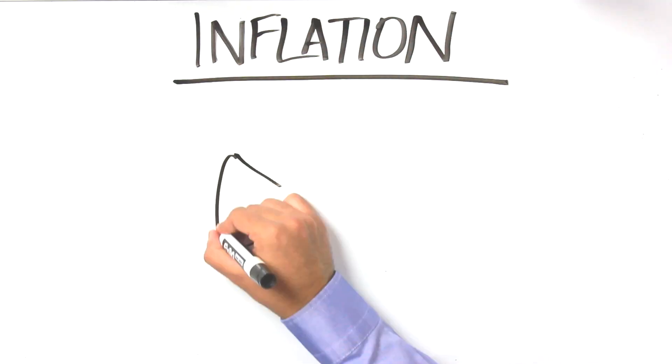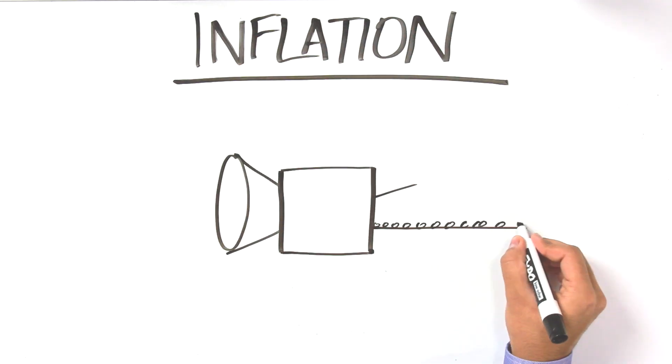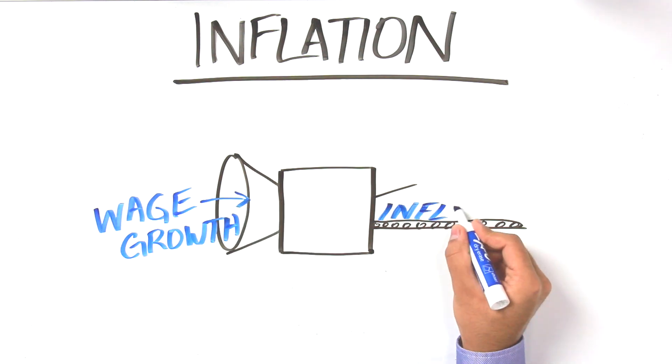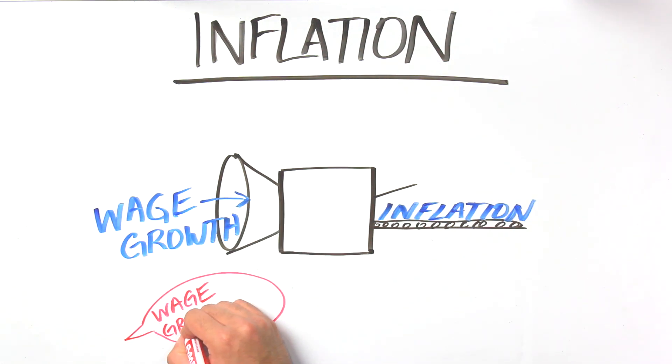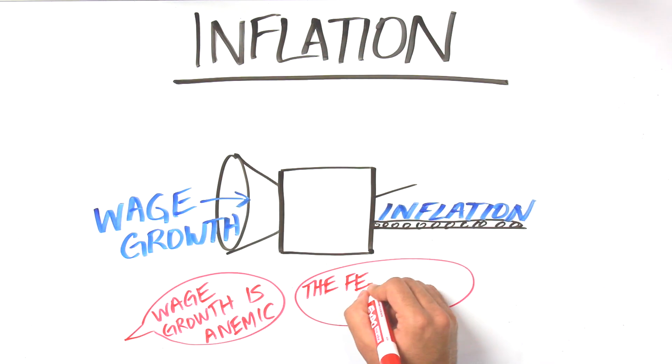Second, let's look at inflation. Janet Yellen and investors know that wage growth drives inflation. And many bond investors tell us that wage growth is anemic, which is why the Fed can't hike.